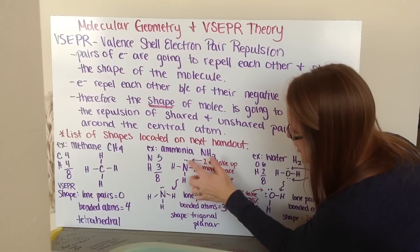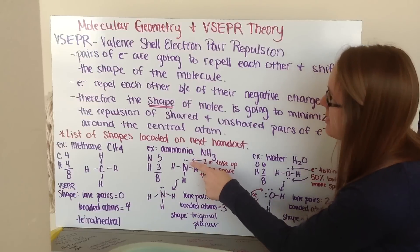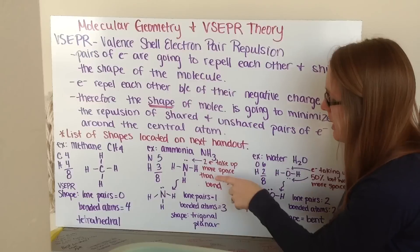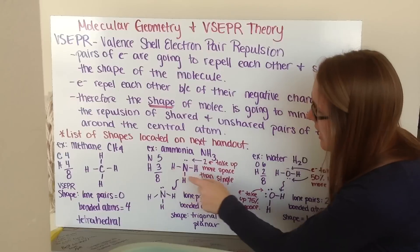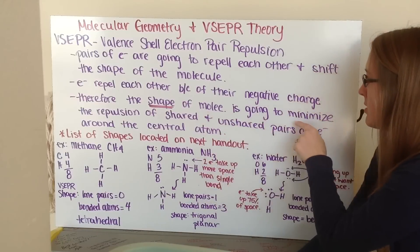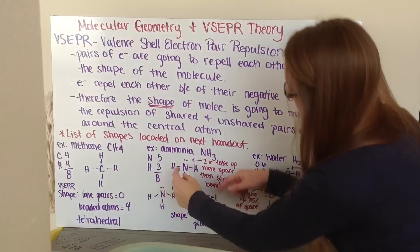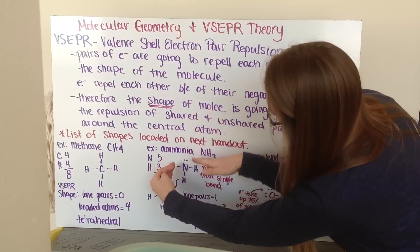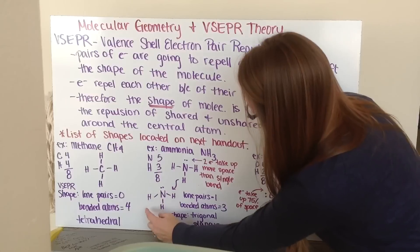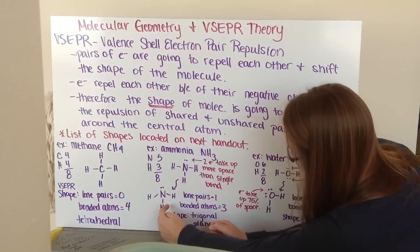I draw my Lewis structure with N in the middle, my hydrogens coming out, and an extra pair of electrons here—my lone pair. This lone pair of electrons, according to my VSEPR theory, these two electrons are going to take up more space than this single bond of my nitrogen to my hydrogen. Because of this, my shape of my molecule is going to minimize the repulsion. These electrons take up this huge amount of space, so they're going to push these hydrogens down and shift them down.